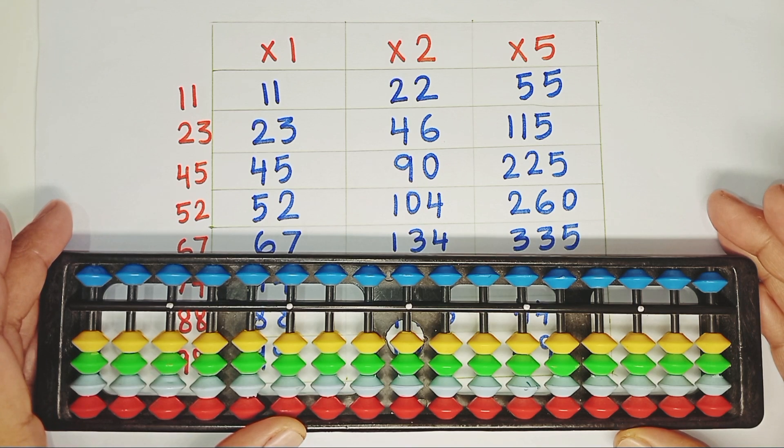We need to prepare a quick multiplication table for numbers from 11 to 99. But don't worry, you only need three multiples: 1, 2 and 5. Let's take a quick look.